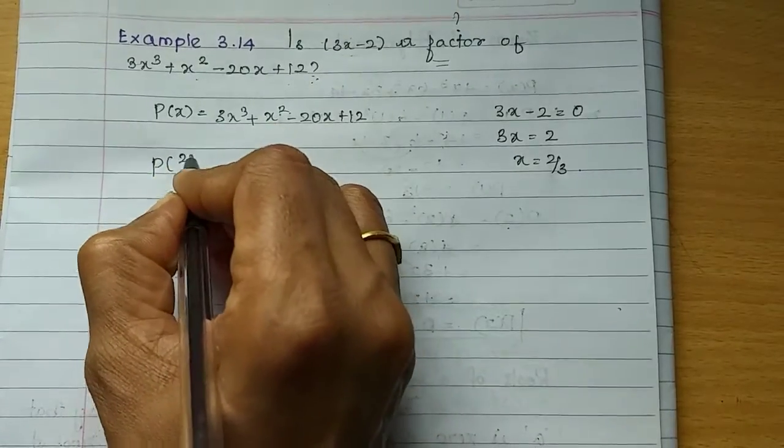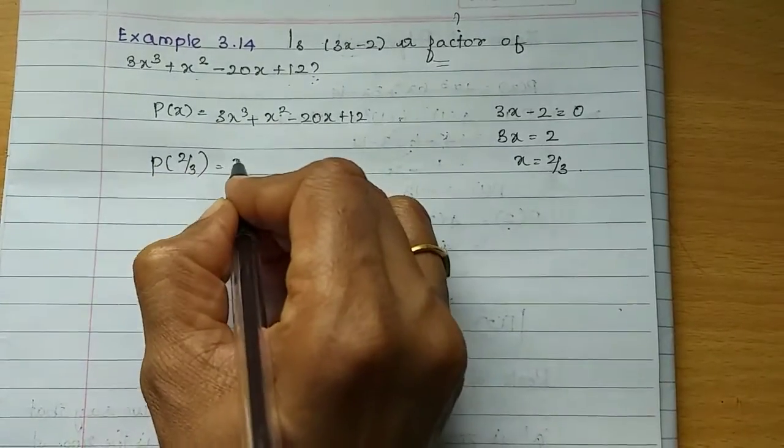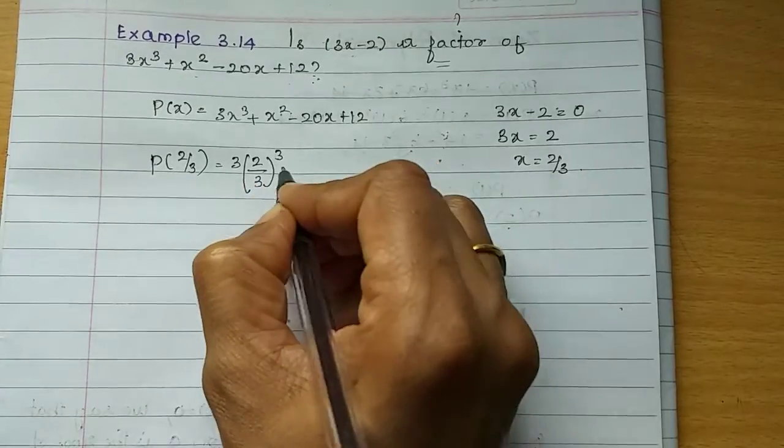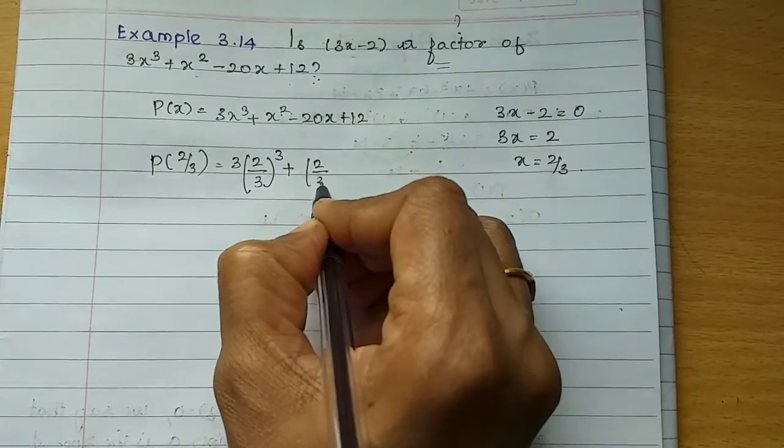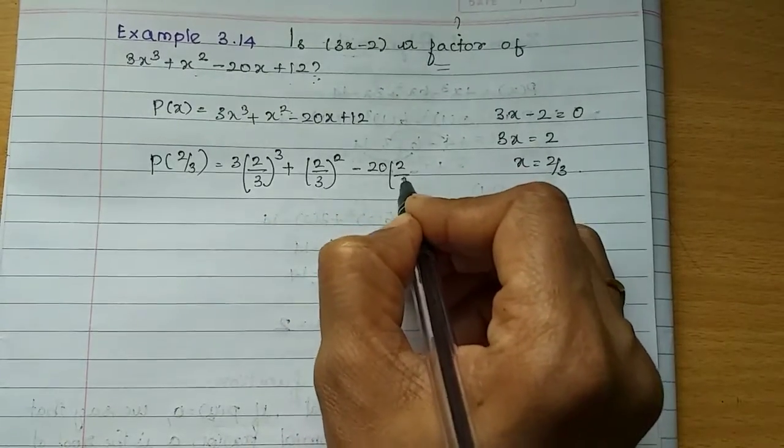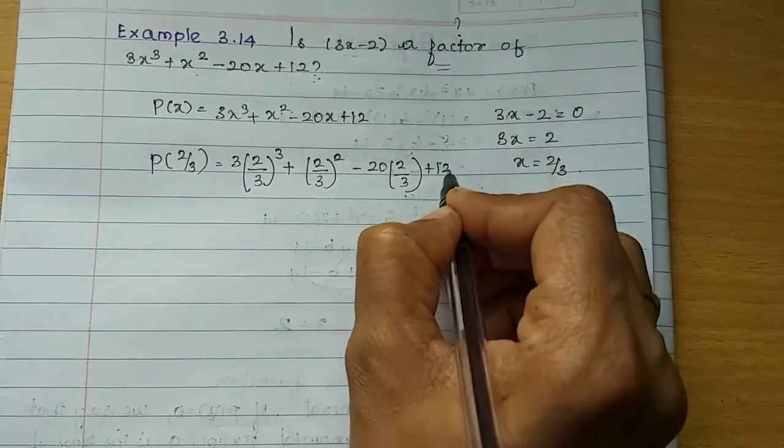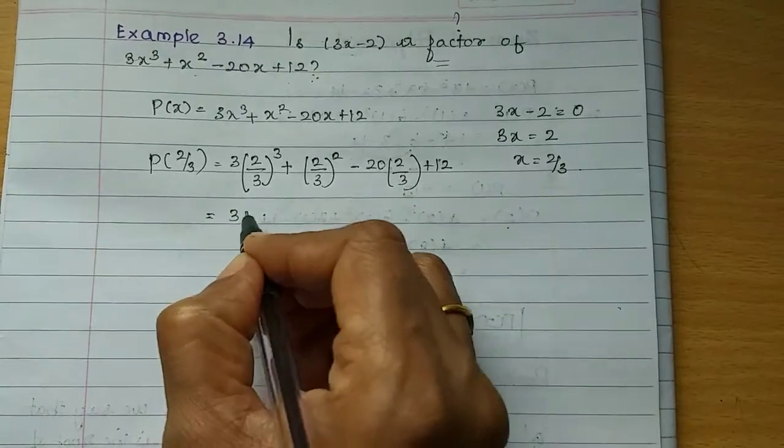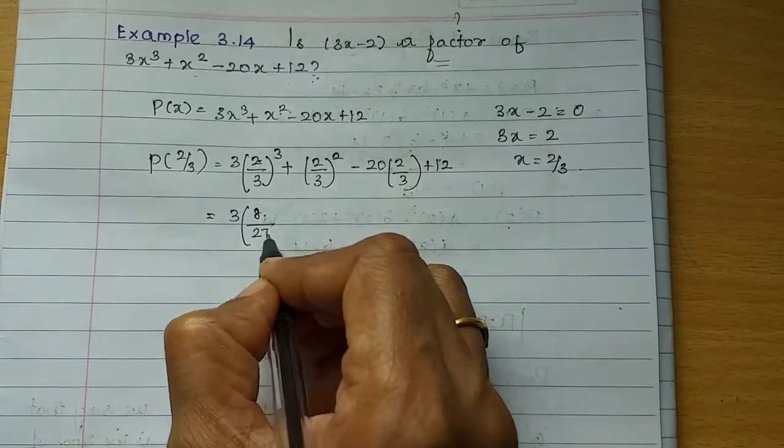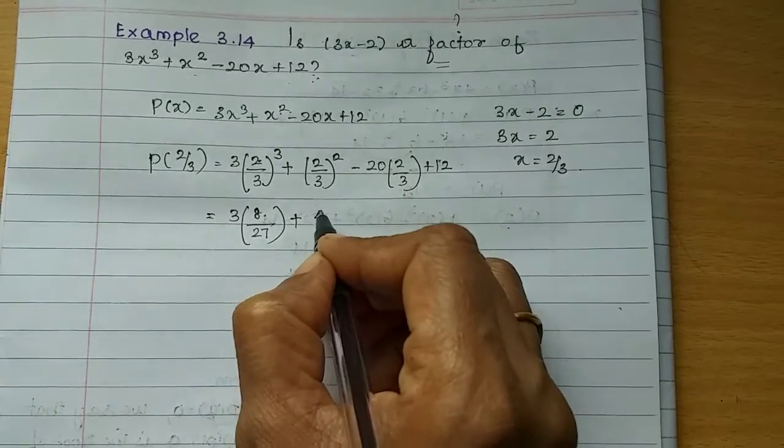Now, P of 2 by 3 is equal to 3 times 2 by 3 cubed plus 2 by 3 squared minus 20 times 2 by 3 plus 12. Which is equal to 3 times 2 cubed is 8 and 3 cubed is 27, plus 2 squared is 4 and 3 squared is 9.